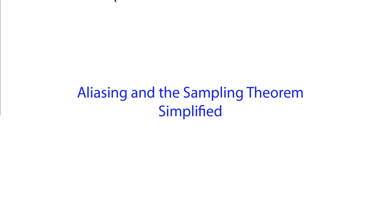In this lecture, we're going to look at aliasing and the sampling theorem using a simpler approach than is usually done. We're not going to rely on extensive use of Fourier transform properties and identities, but rather on a simple mapping between continuous and discrete time frequency.